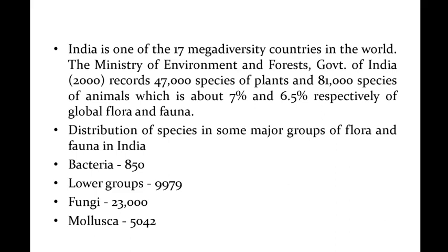The Ministry of Environment and Forest, Government of India, records that 47,000 species of plants and 81,000 species of animals are distributed in our country.